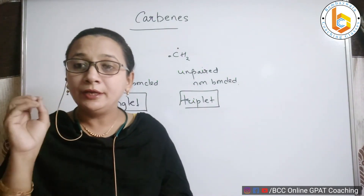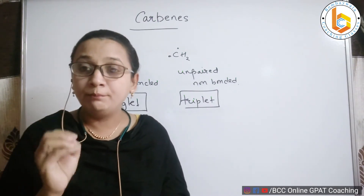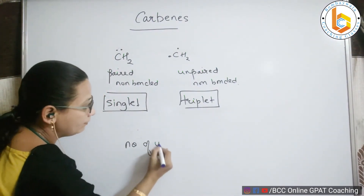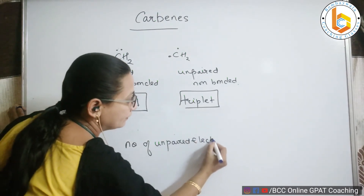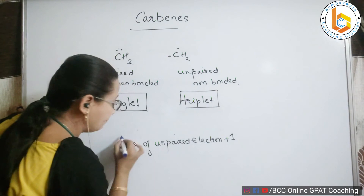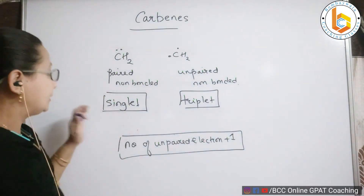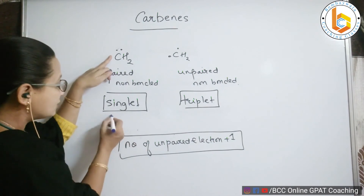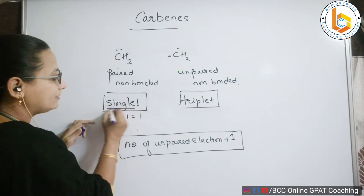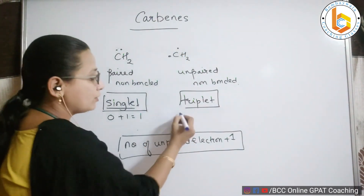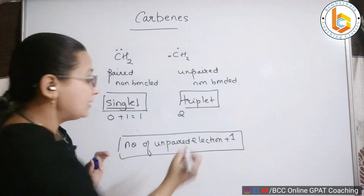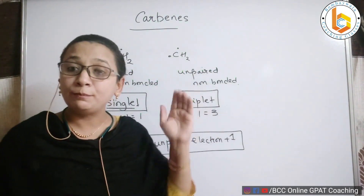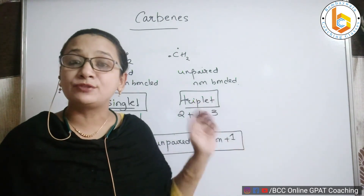Why does a singlet or a triplet appear? Look at this rule: number of unpaired electrons plus one. In the paired case, the number of unpaired electrons is zero, so zero plus one equals one — that is why it is called a singlet. Whereas in the unpaired case, the number of unpaired electrons is two, so two plus one equals three — that is why those states are referred to as triplets.